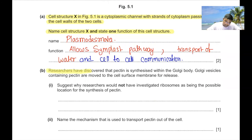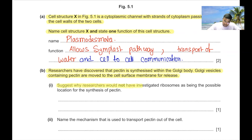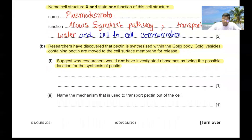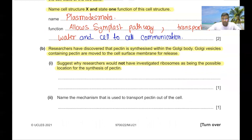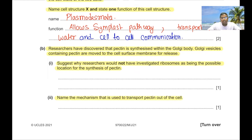Part B. Researchers discovered pectin is synthesized within the Golgi body. Researchers would not have investigated ribosomes as the responsible location because ribosomes only synthesize polypeptides, not polysaccharides. Golgi vesicles containing pectin are moved to the cell surface membrane for release. The mechanism used to transport pectin out of cells is exocytosis.